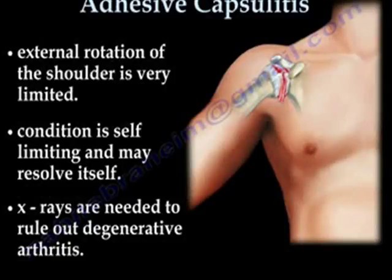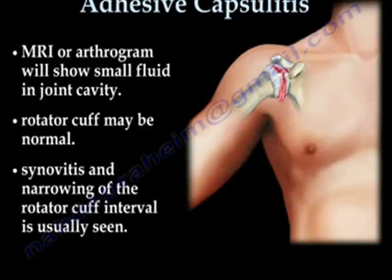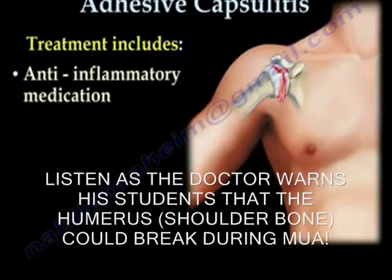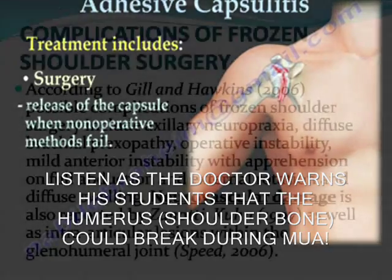The external rotation of the shoulder is very limited. The condition is really self-limited and may resolve by itself. It is better to get X-rays to rule out degenerative arthritis of the shoulder joint. MRI or arthrogram may be needed and will show small fluid in the joint cavity. The rotator cuff will probably be normal, but synovitis and narrowing of the rotator cuff interval is usually seen. Treatment includes anti-inflammatory medication, physical therapy, injections, and manipulation under anesthesia — being careful so the humerus won't break during manipulation. Surgery is done when non-operative methods fail.